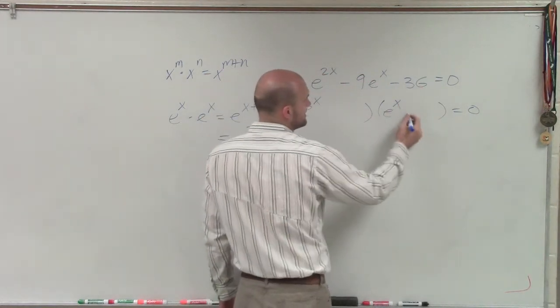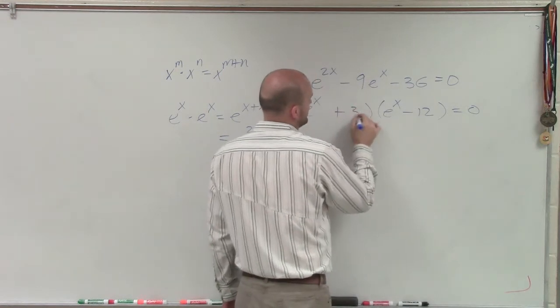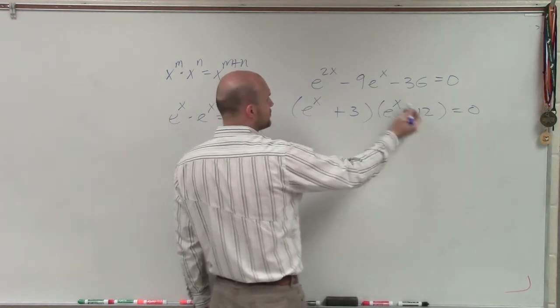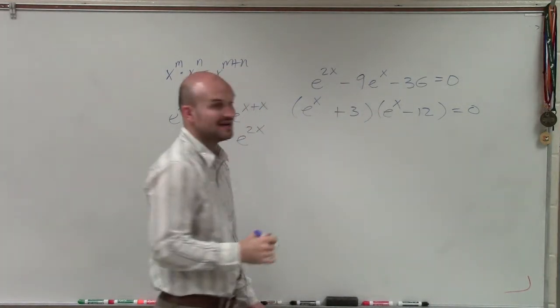Well, to get that, I could do negative 12 plus 3. Because 3 times negative 12 is negative 36, and negative 12 plus 3 is going to leave me with negative 9.